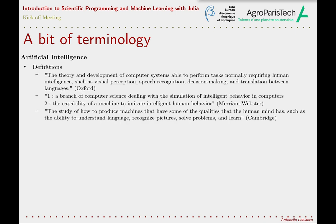Let's look at some definitions of artificial intelligence from leading online dictionaries. The first definition, from Oxford, is: the theory and development of computer systems able to perform tasks normally requiring human intelligence, such as visual perception, speech recognition, decision making, and translation between languages.